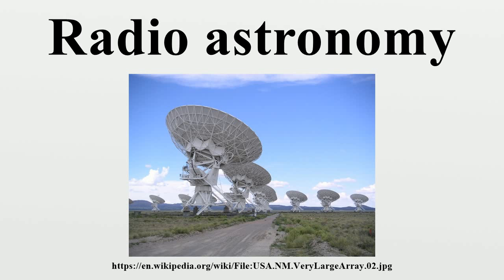Modern radio interferometers consist of widely separated radio telescopes observing the same object, connected together using coaxial cable, waveguide, optical fiber, or other transmission lines. This not only increases the total signal collected, but can also be used in a process called aperture synthesis to vastly increase resolution. This technique works by superposing the signal waves from different telescopes: waves that coincide with the same phase add to each other, while two waves with opposite phases cancel each other out. This creates a combined telescope the size of the antennas furthest apart in the array. A large number of different separations between telescopes are required to produce a high-quality image — for example, the Very Large Array has 27 telescopes giving 351 independent baselines at once.